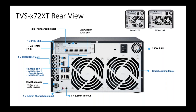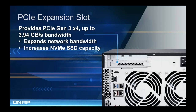The 872XT has large fans that spin slowly, keeping the unit cool without generating unnecessary noise — important because these units are often not in a server room and are probably sitting on a desk in the office. The unit also carries onboard M.2 slots that are PCIe NVMe compatible for very fast caching to increase performance. There's also a spare PCIe slot for upgrades — you can add multiple 10GbE ports, more fast SSDs via our QM2 cards, or a JBOD expansion chassis if you need more storage.